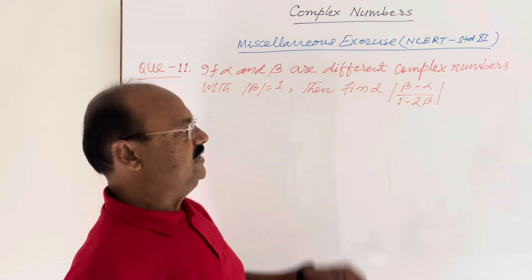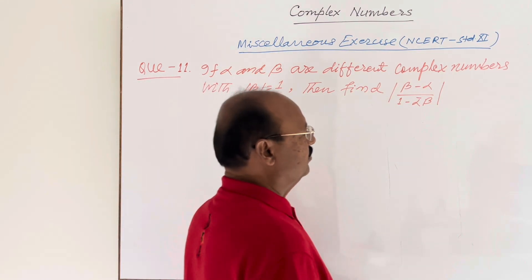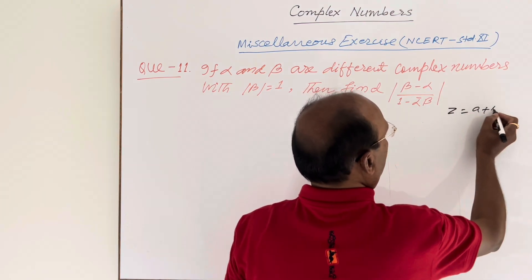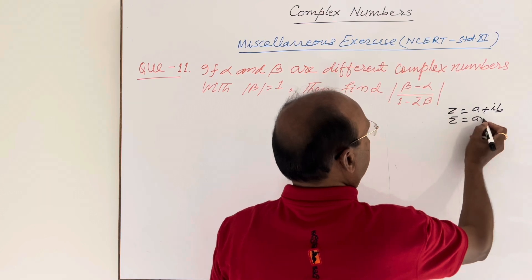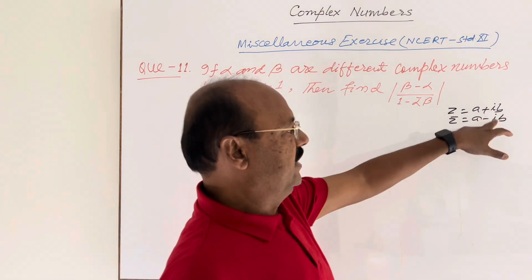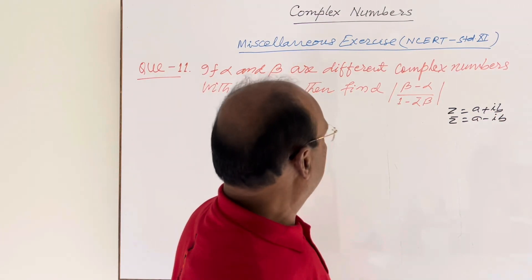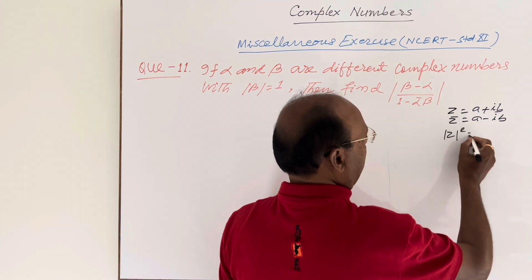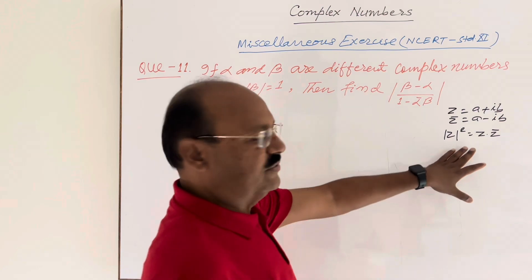Alpha is a complex number, so alpha-bar is its conjugate. We have already discussed in the previous video that if Z is any complex number A plus iB, then its conjugate Z-bar is equal to A minus iB — the sign of the imaginary part is changed. Secondly, we should know that modulus of Z squared is equal to Z into Z-bar. We are going to use this formula here.